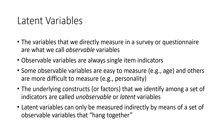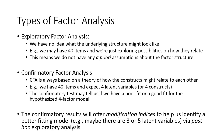The underlying constructs or factors that we identify among a set of single-item indicators are what we call unobservable or latent variables. We can't see them directly — we can only see them indirectly or assume that they exist in relation to observable variables. Latent variables can only be measured indirectly by means of a set of observable variables that somehow logically hang together. The tool we use to analyze latent variables is factor analysis.